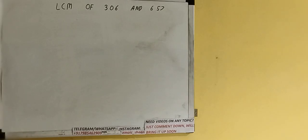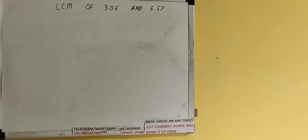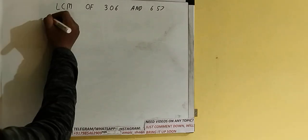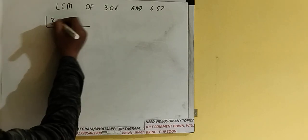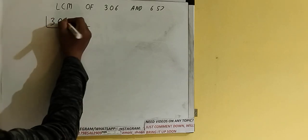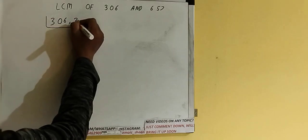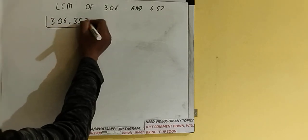Hello friends, and in this video I will be helping you with the LCM of the numbers 306 and 657. So let's start. First of all, we need to write down both the numbers like this: 306 and 657.